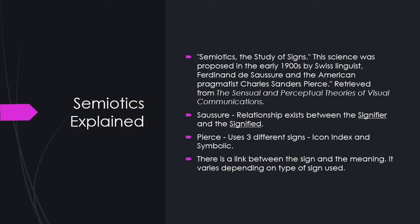Semiotics is called the study of signs. This science was proposed in the early 1900s by Swiss linguist Ferdinand de Saussure and the American pragmatist Charles Sanders Peirce, retrieved from the sensual and perceptual theories of visual communications. Signs can carry a variety of meanings, and meanings can change and grow depending on life experience. The two scholars had different ideas about this theory. Saussure argued that there was no inherent or necessary relationship between that which carries the meaning — the signifier, usually the word or symbol — and the actual meaning which is carried, the signified. Retrieved from Hamilton 2021.